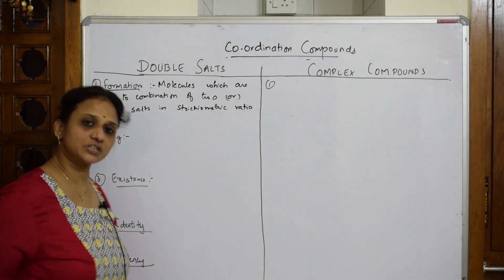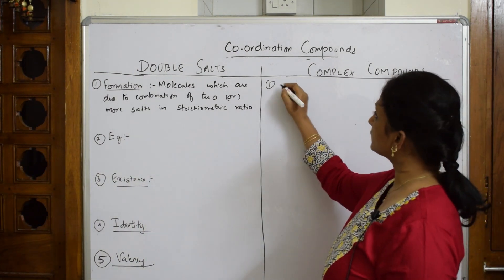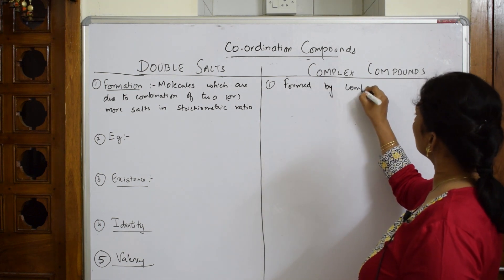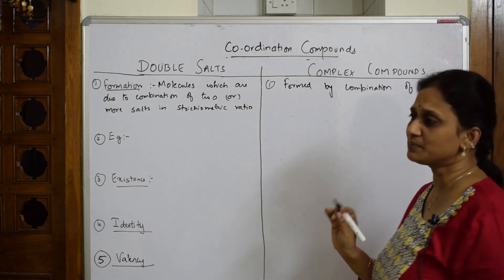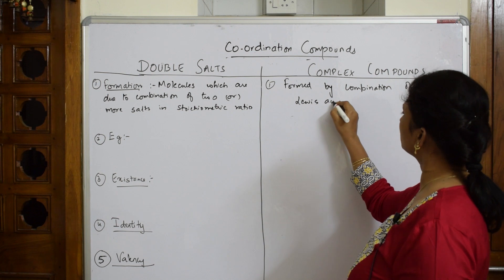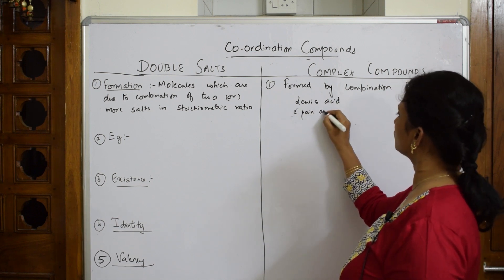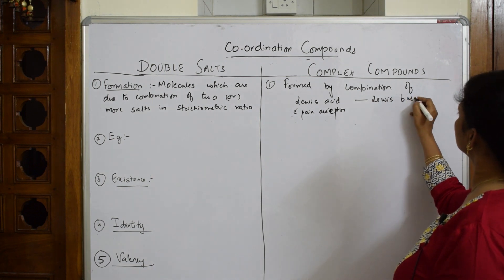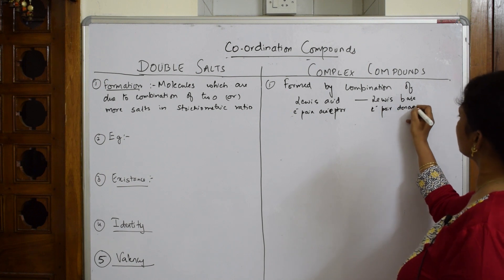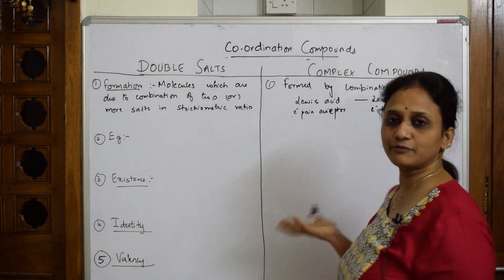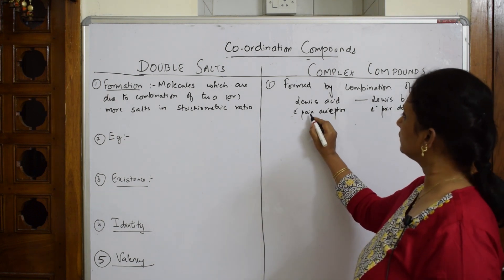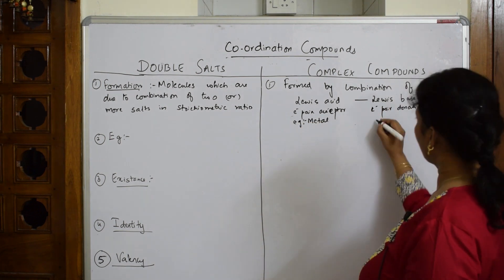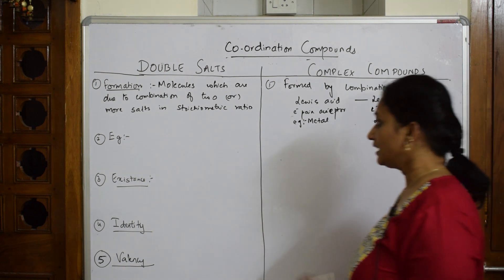As for the formation of complex compounds, both are addition compounds, but complex compounds are formed by the combination of a Lewis acid — that is, an electron pair acceptor — and a Lewis base — that is, an electron pair donor. Together they form a coordinate covalent bond and produce a coordinate complex. The metal atom acts as the Lewis acid and the ligand acts as the Lewis base.